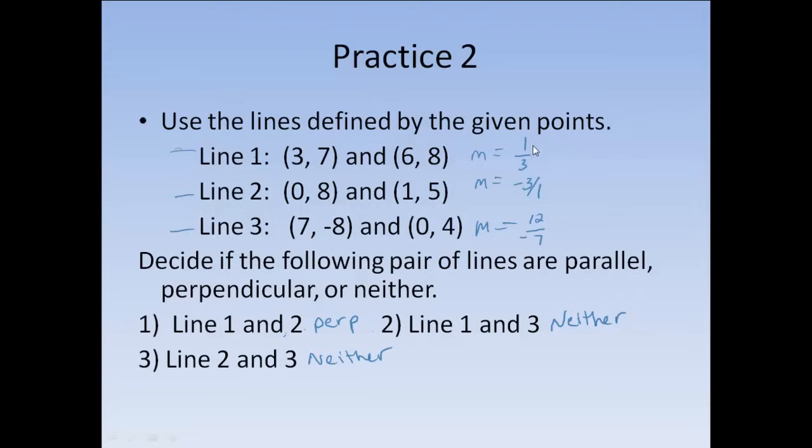Okay. Line 1, I had a slope of 1 over 3. Line 2, I had negative 3 over 1. Line 3, I had 12 over negative 7. Well, when I came down here and I had to compare line 1 to line 2, I'm looking at 1 third compared to negative 3. Now, it might not be obvious right away that these are actually opposite reciprocals. But, negative 3 is also negative 3 over 1. And, these two are reciprocals of each other. And, they are also opposites. One is positive, so one's going up. And, one is negative, so one's going down. So, they are perpendicular because they're opposite reciprocals. Then, I had to compare line 1 and line 3. So, this time I was looking at the 1 third compared to the negative 12 sevenths. Those are neither. They're not identical, which would make them parallel. And, they're not opposite reciprocals.